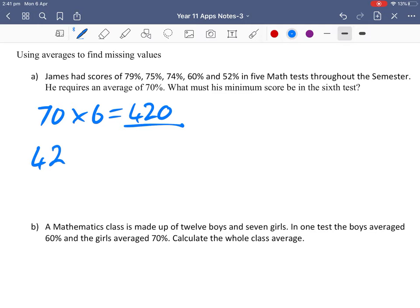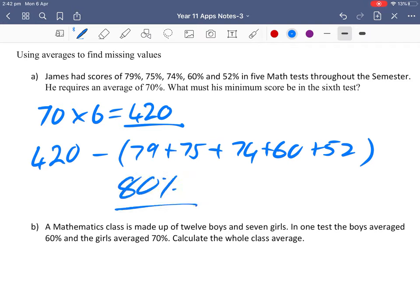So from the 420, what I'm going to do is add up all these previous scores and then take that away from 420, and that should leave me with the final score he needs, which is 80%. Good luck with that one, James.